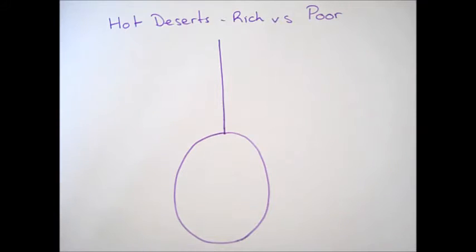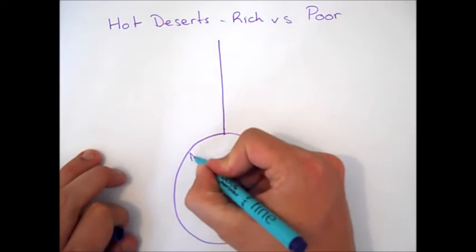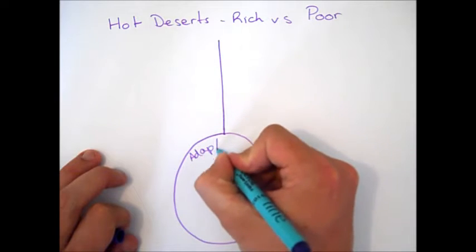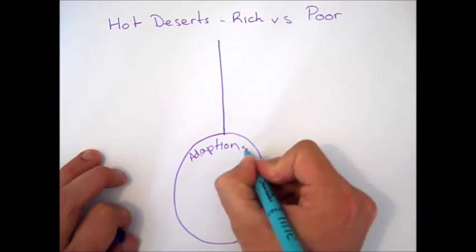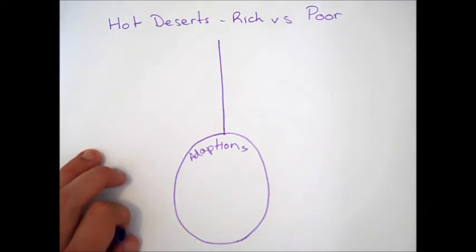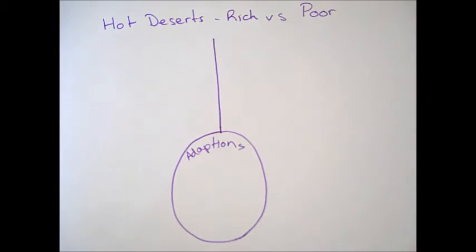So, the final case study for the Ecosystems Unit, the Living World part of the course, is looking at hot desert environments, looking at the difference between rich and poor hot deserts. Before we move into that, I just want to quickly look at the adaptations of desert vegetation. It's something that could come up, could be a nice easy four-marker if you get the opportunity.